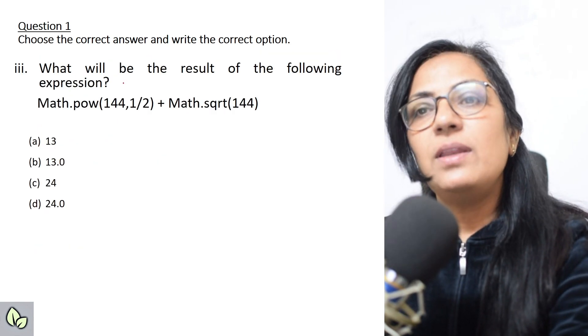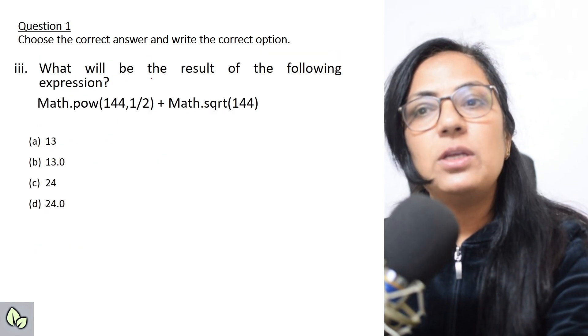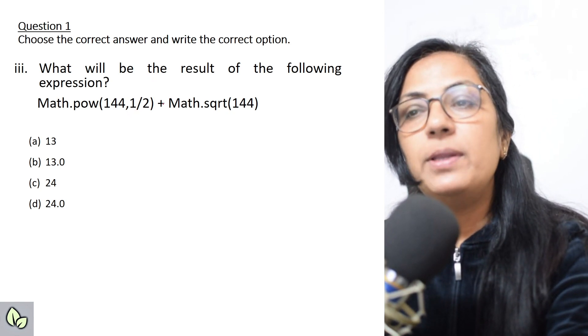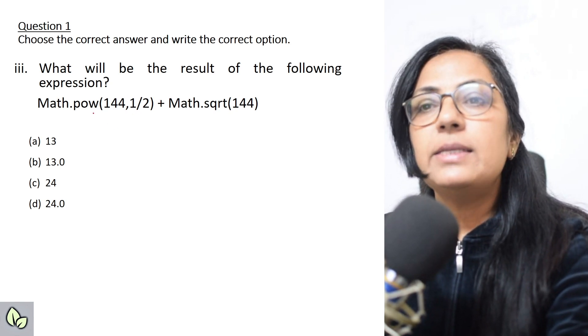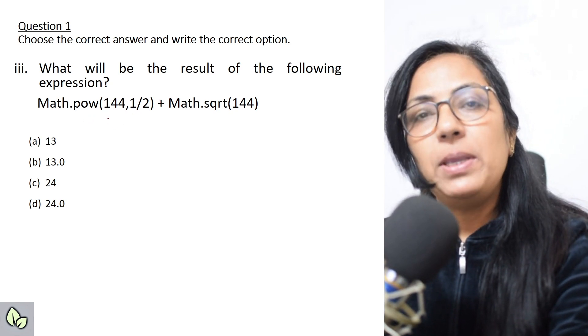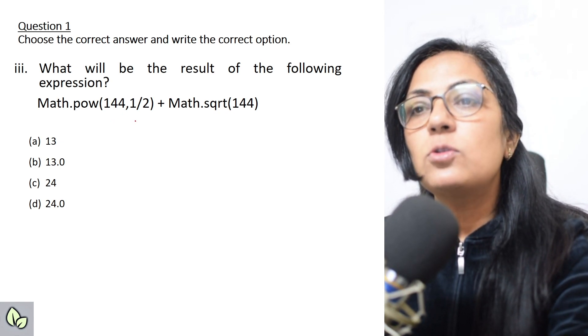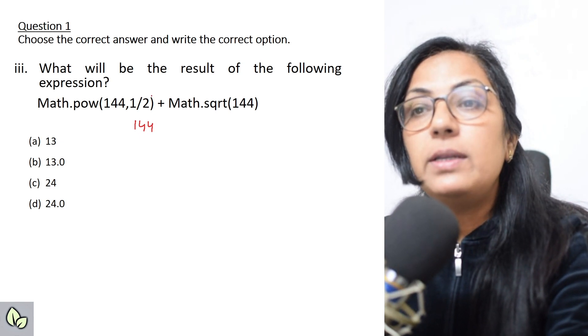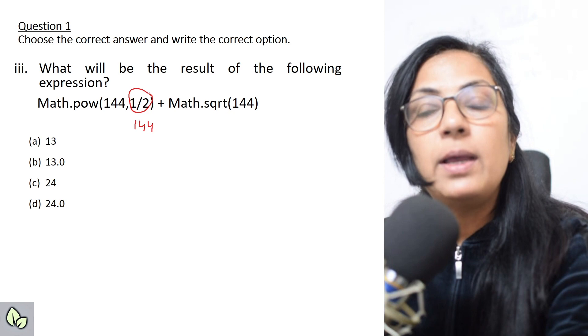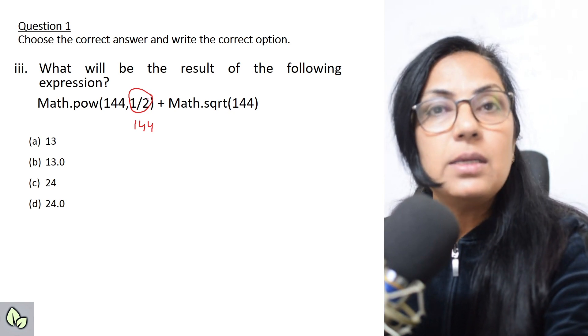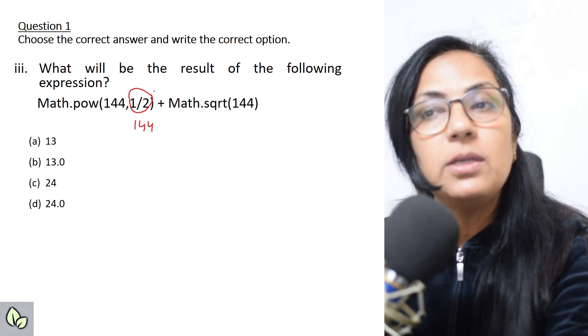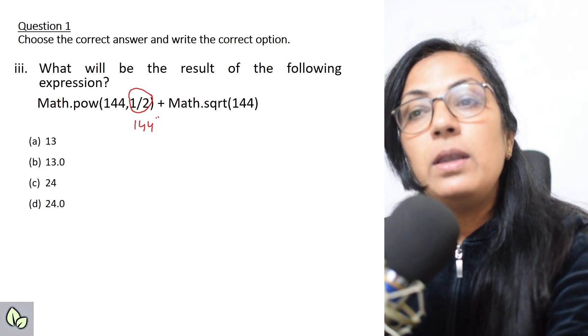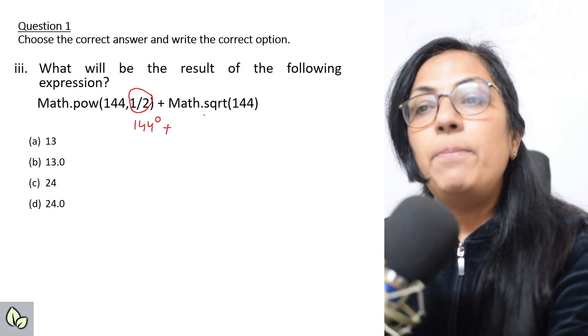The next question is: what will be the result of the following expression? Math.pow in bracket 144 comma 1 by 2 plus math.sqrt of 144. Let us solve this. Math.pow function gives you the power value, so it is 144 to the power 1 by 2. And what is this? This is 1 and 2, both are integers, and in integer division, slash sign gives you the quotient part.